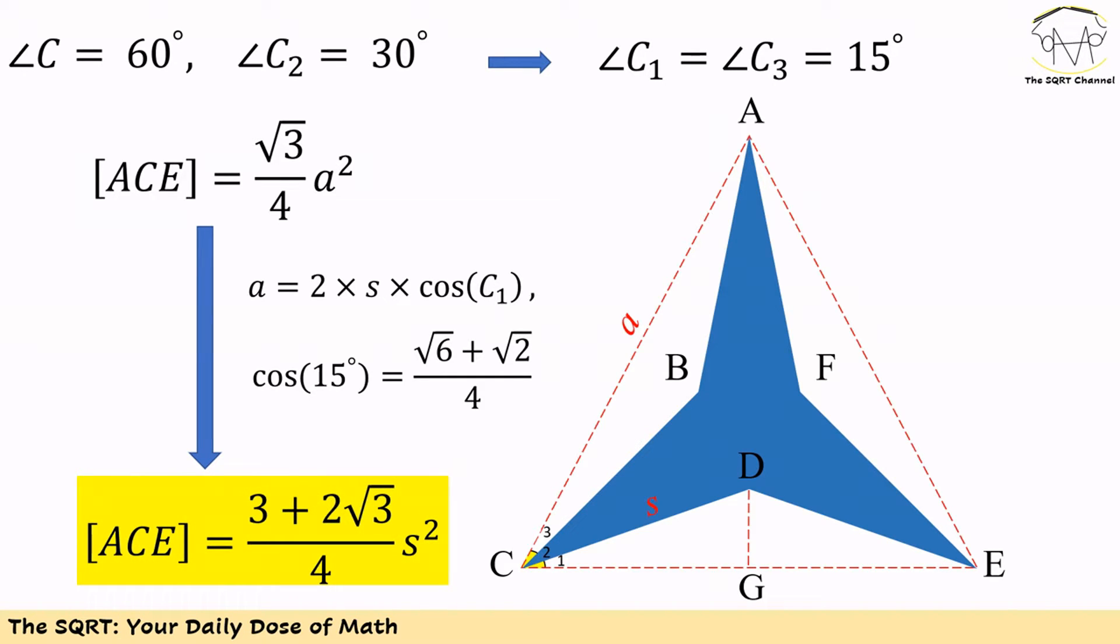We also know the area of ACE is equal to √3/4 times a², where a is the side of this triangle ACE. If we use s as the side of the polygon, then a can be written as 2 times s times cosine of C1, and C1 is 15 degrees.